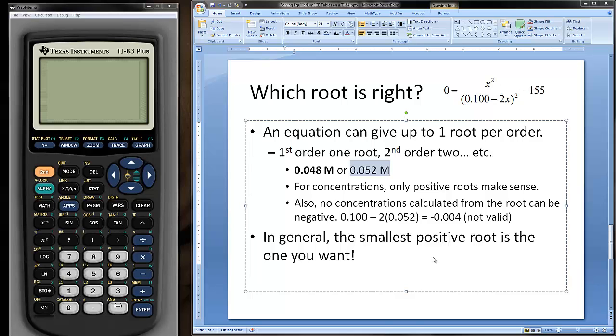Here's the bottom line on roots. In general, the smallest positive root is the root that you want. That is the correct root of the equation to solve the equilibrium calculation. Let's go over why that is. First, it's got to be positive because concentrations cannot be negative. Concentrations can only be positive. The second reason you want the smallest positive root is that roots that are too big will cause expressions within the equation to become negative.